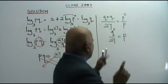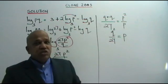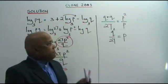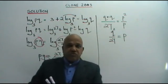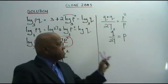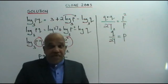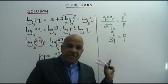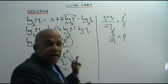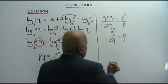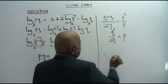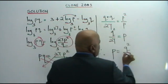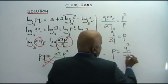But you don't leave the answer like this, because you are asked to write P in terms of Q. The subject is P, and the subject must always be on your left. Therefore, P is equal to Q squared over 27.